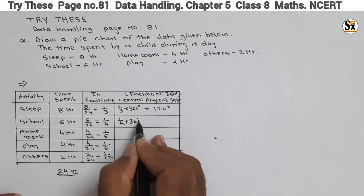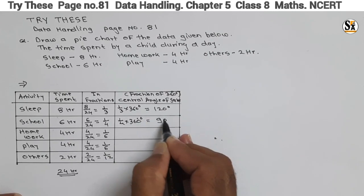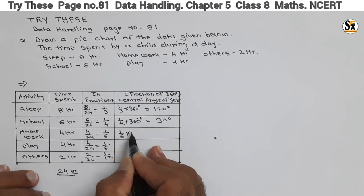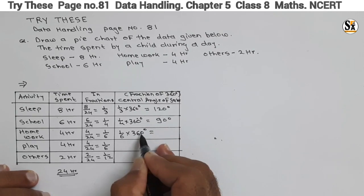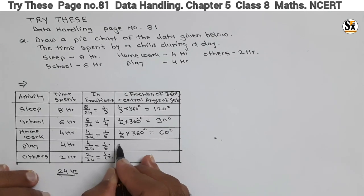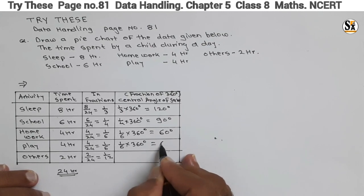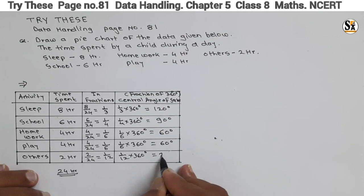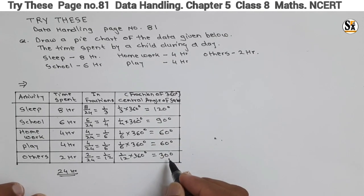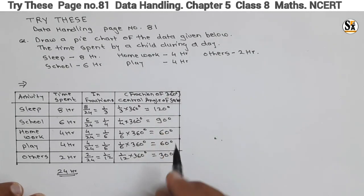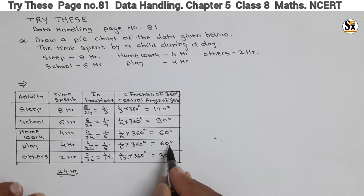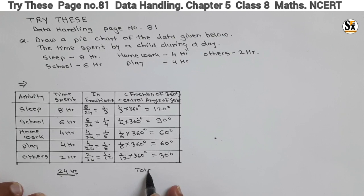For school: 1 by 4 into 360 degrees equals 90 degrees. For homework: 1 by 6 into 360 degrees equals 60 degrees. For play: also 60 degrees. For others: 1 by 12 into 360 degrees equals 30 degrees. If we add all these — 120 plus 90 is 210, plus 60 is 270, plus 60 is 330, plus 30 is 360 degrees. The total is 360 degrees, confirming these are parts of the whole circle.